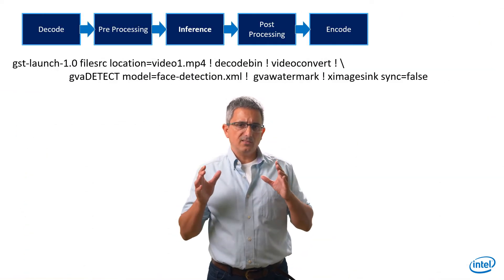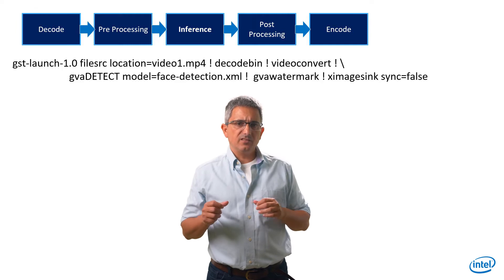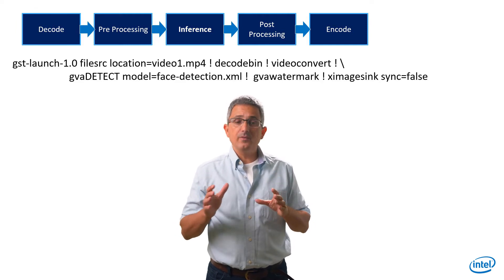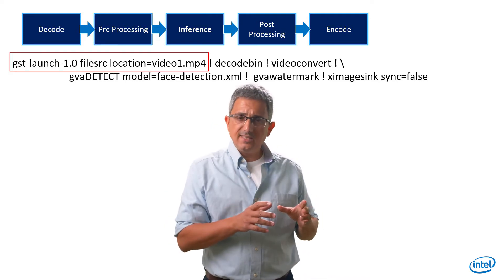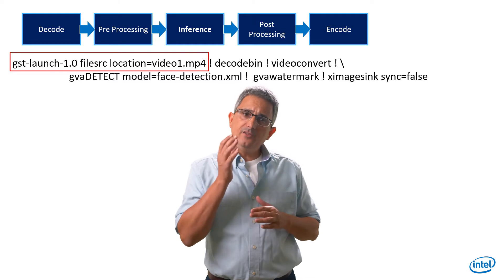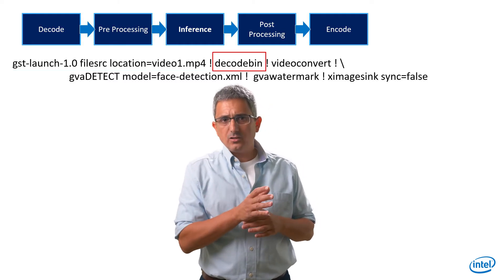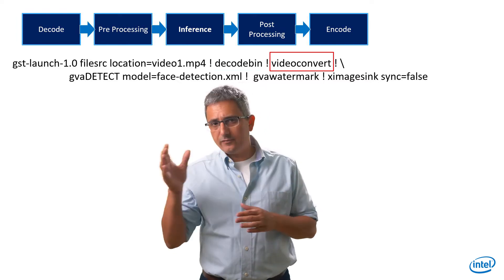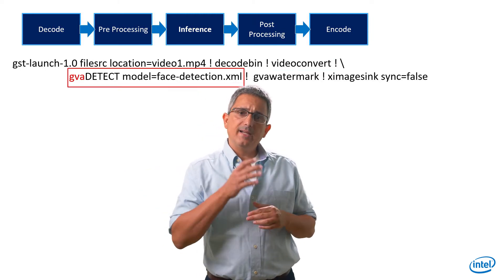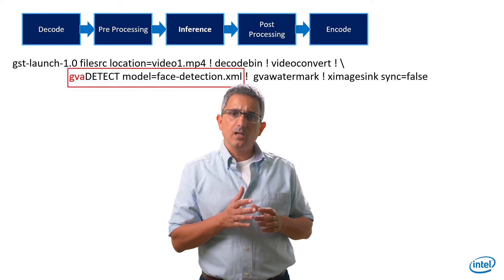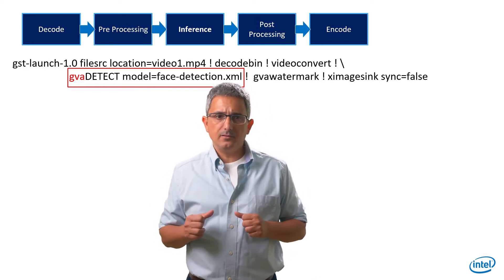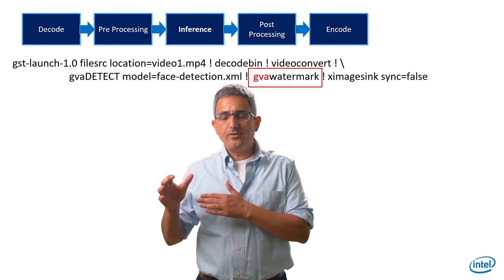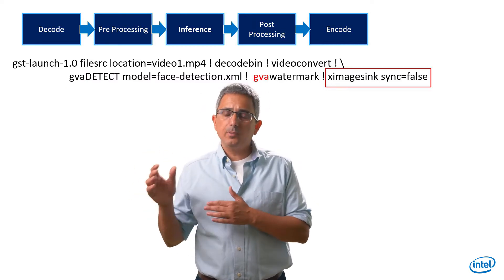A typical workload that we can construct may look like this. This is really one line that describes the full pipeline. The source of the pipeline is a video file. The exclamation marks indicate a new pipe stage. The next stage is to decode the video, then convert the format so it will match the inference input format, and now we're running inference. The model is face detection, and we can add all the required parameters. Then we draw the detection results on the original image and display it to the screen.